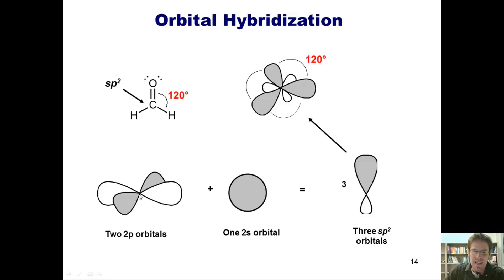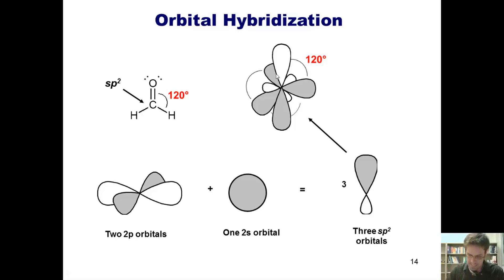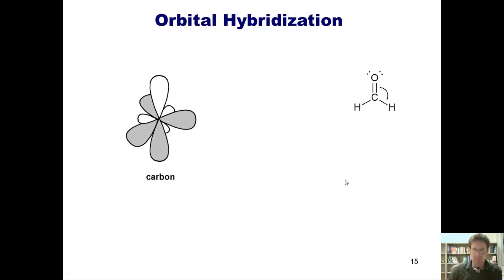In contrast to sp³, in sp² hybridization carbon left one of its 2p orbitals out — it only used two of them in the hybridization process. So what happened to the third 2p orbital? It goes above and below the plane of these three individual sp² orbitals, 90 degrees perpendicular to that plane. That's what an sp² hybridized carbon center looks like. Carbon then places its four valence electrons — three individually into its three sp² orbitals and one into its perpendicular 2p orbital, which was left unused in the hybridization.